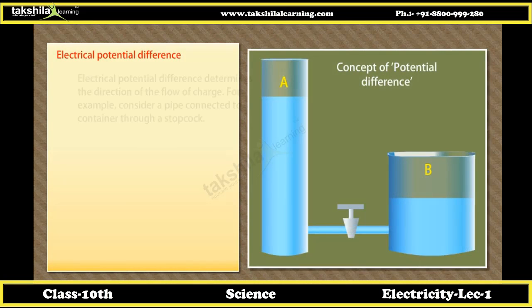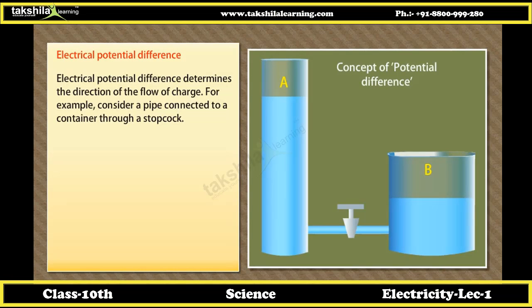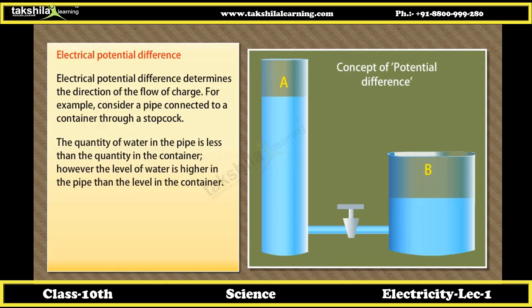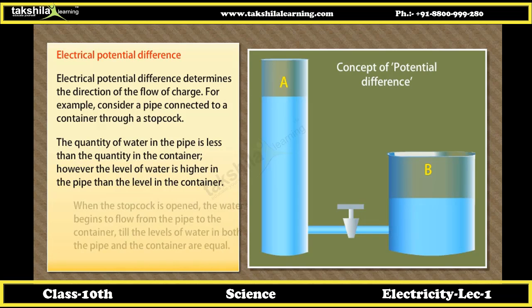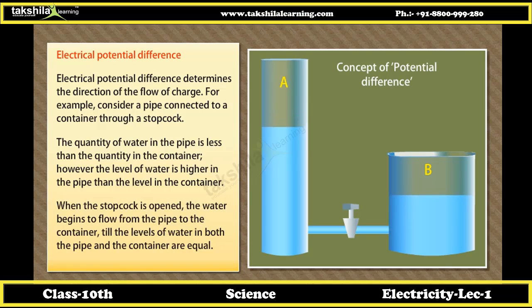Electrical potential difference determines the direction of the flow of charge. For example, consider a pipe connected to a container through a stop cork. The quantity of water in the pipe is less than in the container; however, the level of water is higher in the pipe. When the stop cork is opened, water flows from the pipe to the container until the levels are equal. This shows it is the level — not the quantity — that decides the direction of flow, and it is the potential difference that is responsible.